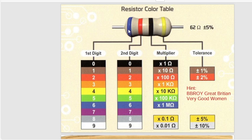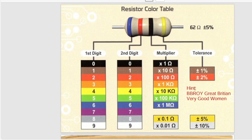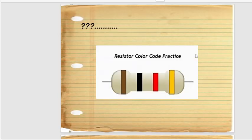You just have to memorize it once. The first color band is the first digit, the second band is the second digit, the third one is the multiplier, and the fourth color band is for tolerance. The tolerance includes: Brown = ±1%, Red = ±2%, Yellow = ±5%, and Gray = ±10%.